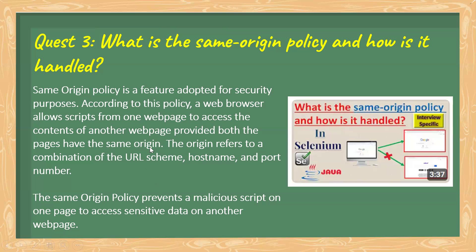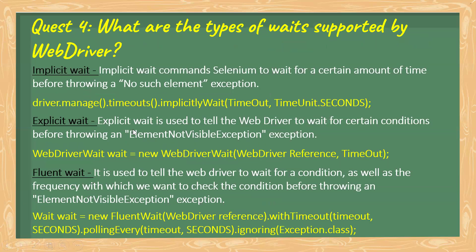In simple terms, the same origin policy prevents a malicious script on one page from accessing sensitive data on another web page. Now, the next question is: what are the types of waits supported by WebDriver? Selenium WebDriver supports implicit wait, explicit wait, and fluent wait.